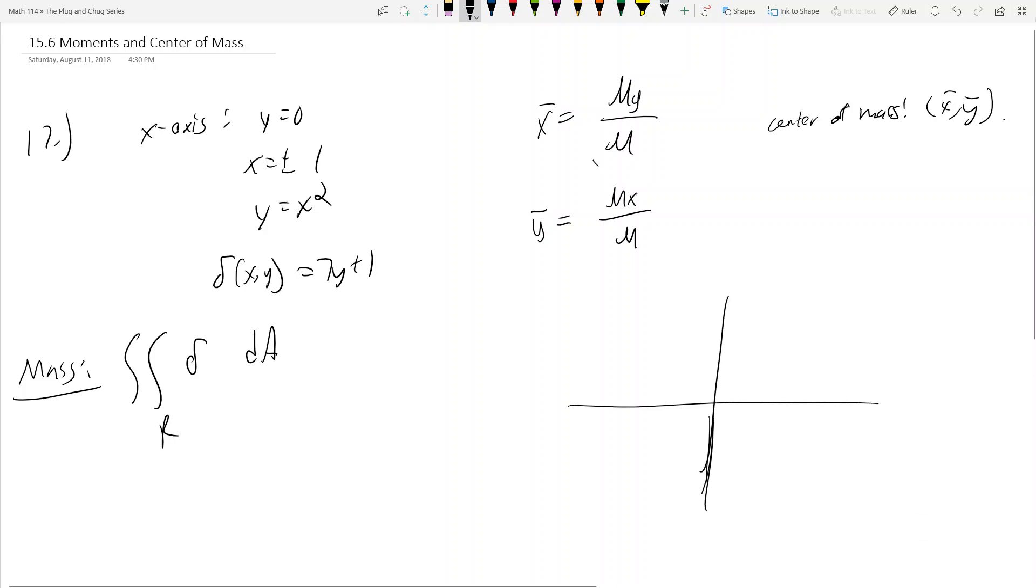Before we start, let's write down the formulas that we need. We're in two dimensions because my density function only has two variables. So the center of mass x-bar is equal to My over M, and the center of mass y-bar is equal to Mx over M. The center of mass then is going to be x-bar comma y-bar. So M is the mass, and Mx, My are the moments of inertia, or the first moments about these axes.